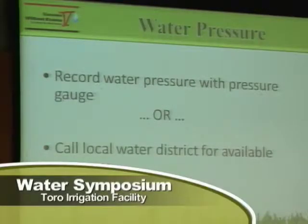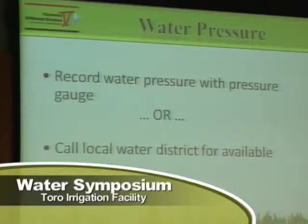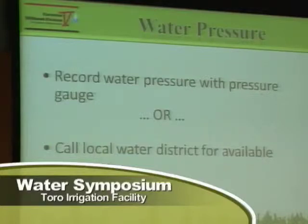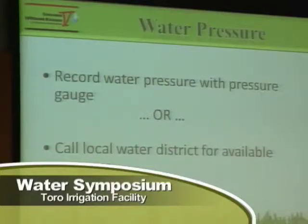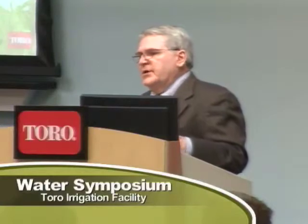We need to know what the water pressure is. You can go out and record the water pressure, especially if you have existing irrigation — do you have sufficient pressure for your sprinkler system to operate at its optimum efficiency? If the pressure's too low, you need to add pumps. If it's too high, you need to add regulators. If you can't measure it and you're doing a new project, you can call the water district and get the information from them.